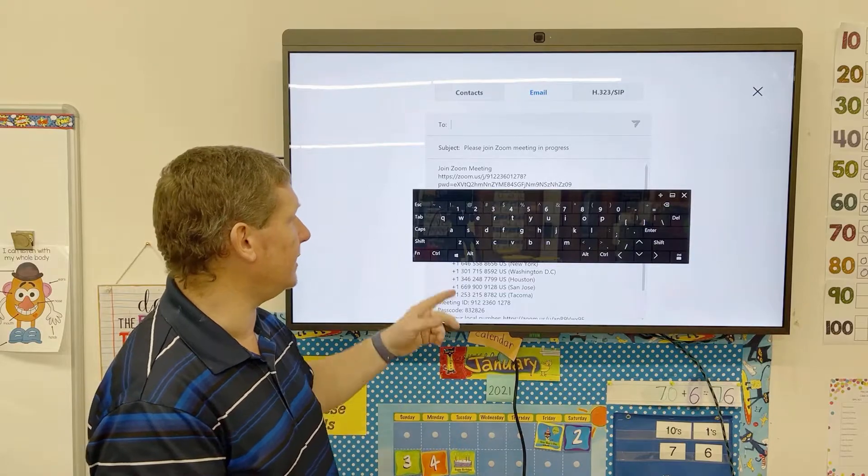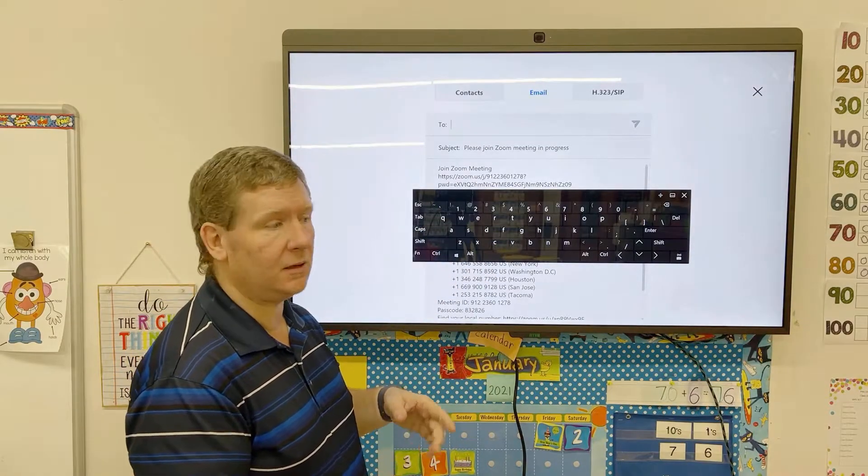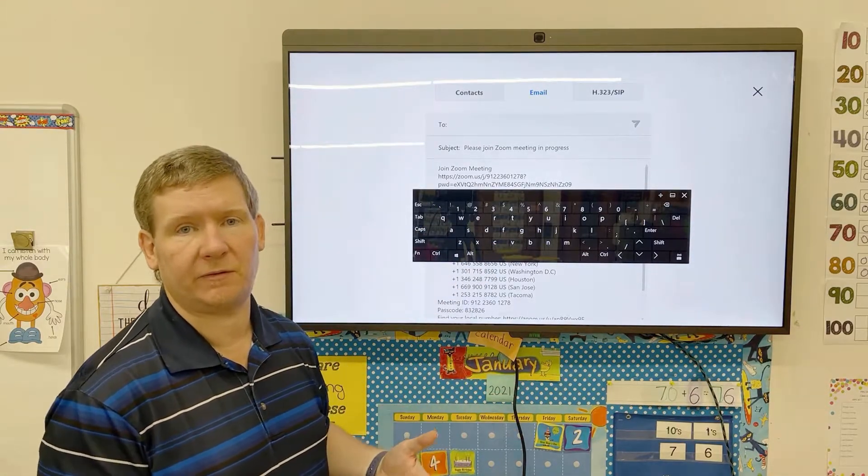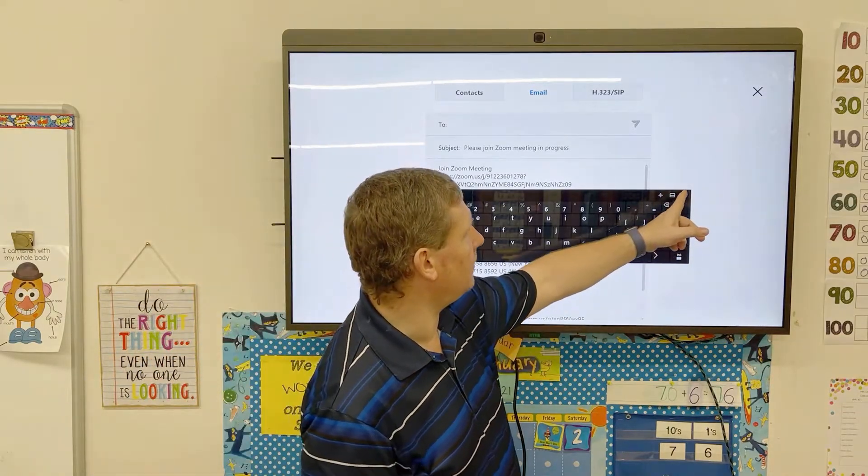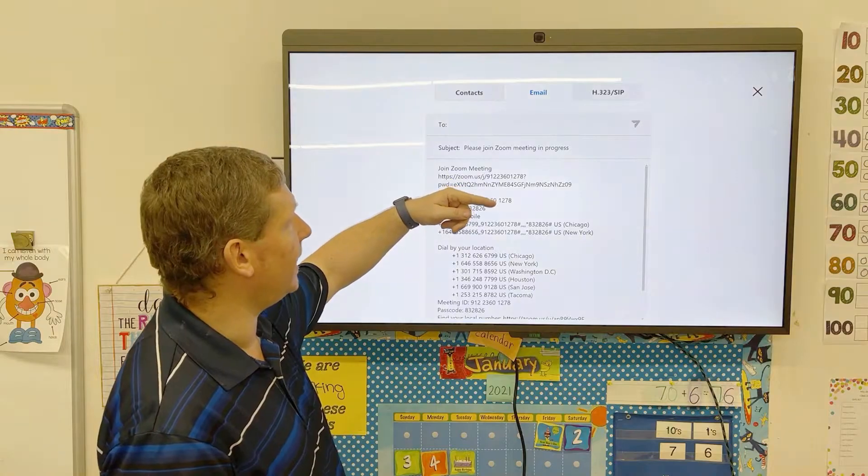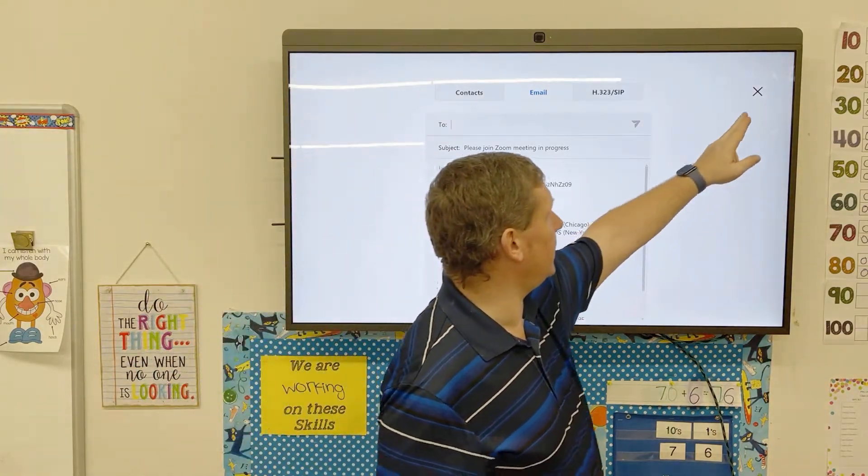The other way you could do it is email this to yourself, go on your laptop or your tablet or your phone, and then you could forward it out to everybody that you want to receive that email. But once you send that email out, it will email them, and then they can join the meeting.